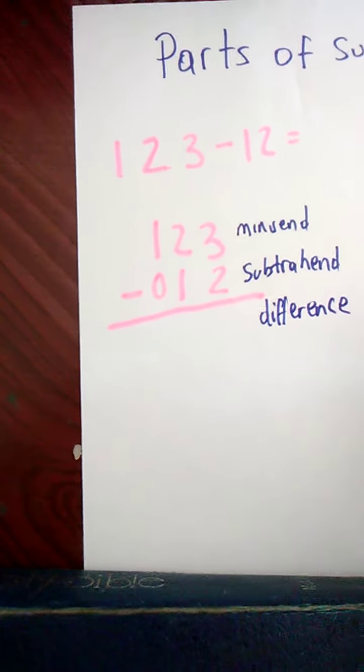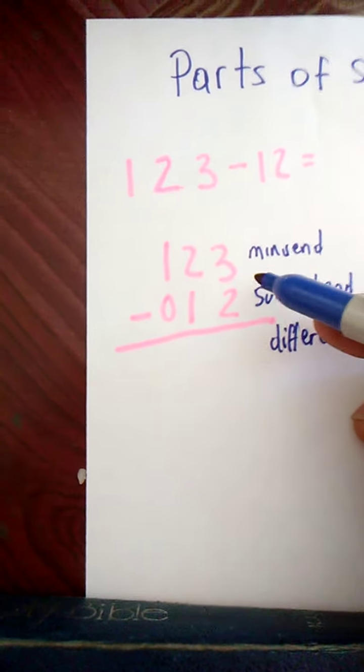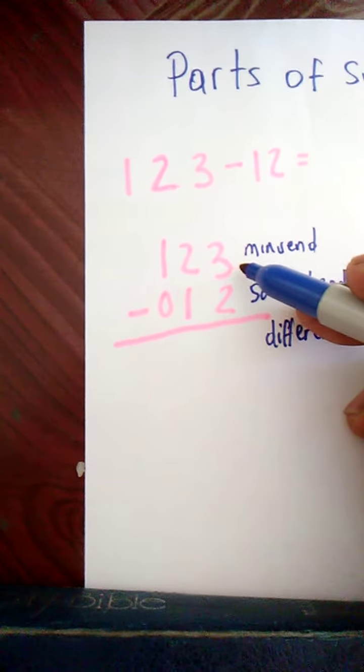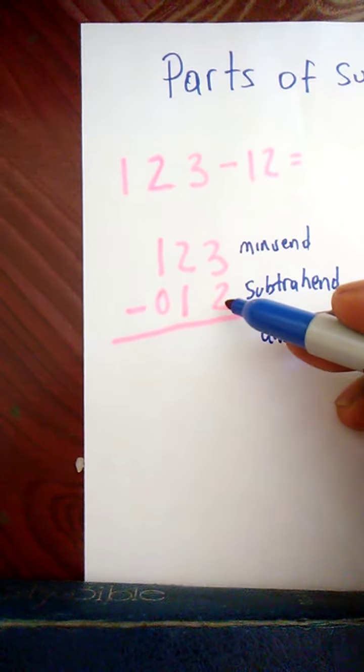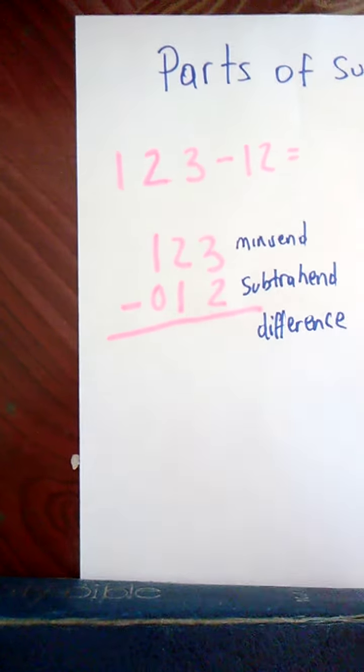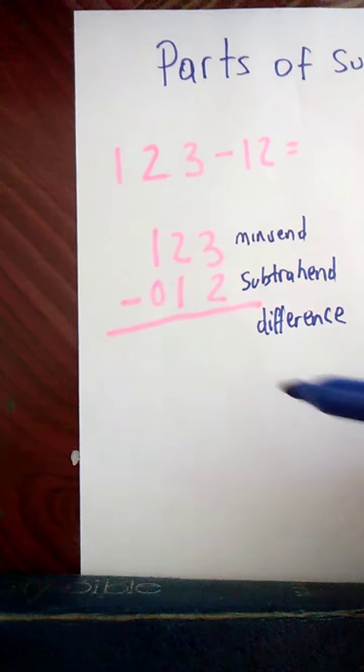So your subtrahend must be equal to or less than your minuend. You can't have your minuend smaller than your subtrahend. If you do, then you'd have to borrow a 10 from over here to make this big. And I'll show you that later.